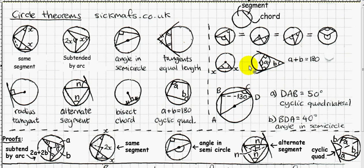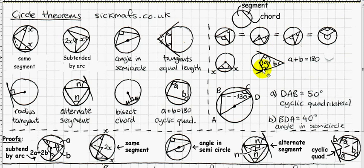These next results are not circle theorems themselves, but are derived from them. Since a radius and a tangent meet at 90 degrees, you have two right angles making 180 degrees, and since a quadrilateral's interior angles add to 360 degrees, the remaining two angles must also add to 180. Note this is not a cyclic quadrilateral since the vertex is not on the circumference.